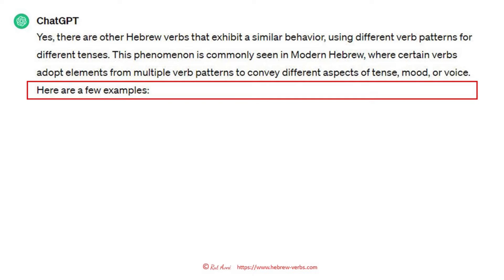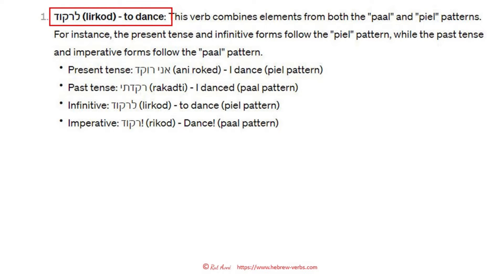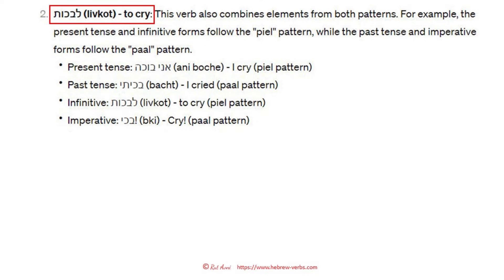Well, now I'm super curious. And you know, ChatGPT always answers really fast. So it goes like: lirkod, to dance — livkot, to cry — and then lashir, to sing.